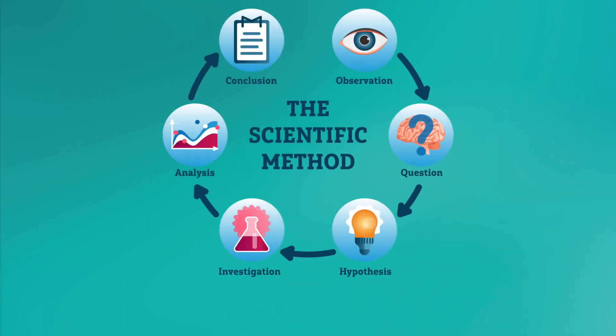In our last lesson, we learned all about the steps of the scientific method. Today, we'll be focusing on different types of investigations that can occur as part of this process. Once we've made an observation, asked a question, and formed a hypothesis, how do we know what kind of investigation to use to answer our question? Well, that will all depend on the type of question we're trying to answer.